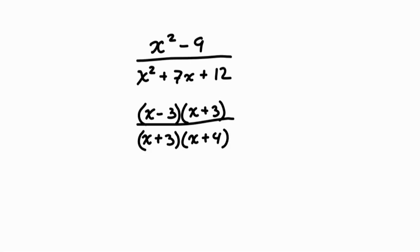The denominator has two factors, x plus 3 and x plus 4. We're going to set each one of them to 0. x plus 3 cannot equal 0, therefore x cannot equal negative 3. x plus 4 cannot equal 0, therefore x cannot equal negative 4.